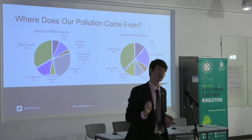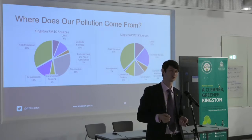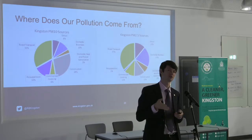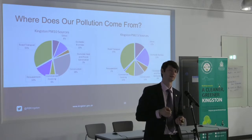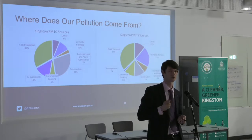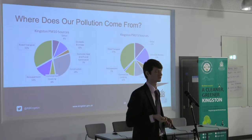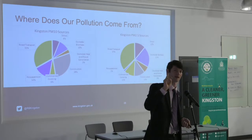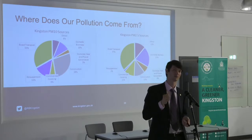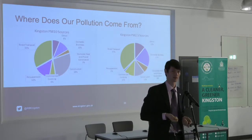For particulate matter, PM10 on the left and PM2.5 on the right, road transport is again the largest single contributor, but its contribution is much less dominant than for nitrogen oxides. Non-road transport emission sources take up a larger share. In particular, 28% of our PM10 comes from construction — largely construction dust and emissions from non-road mobile machinery such as excavators and generators. It's also very important to point out that 21% of our PM2.5 comes from domestic biomass burning — effectively people burning wood in their homes — which many people don't realise has such an impact.